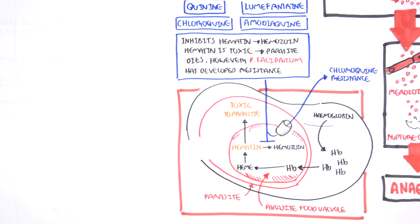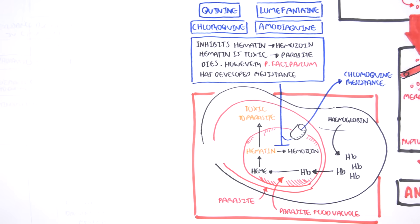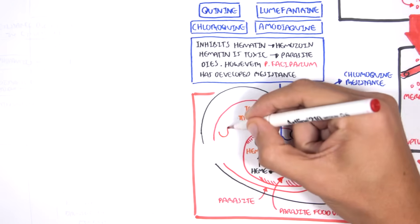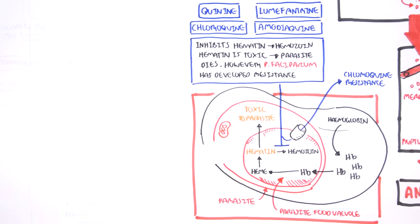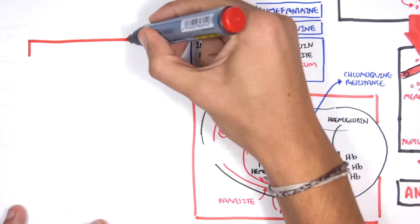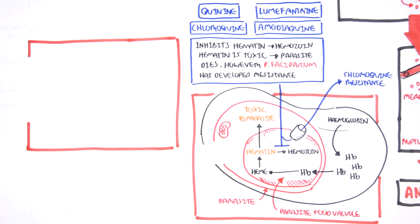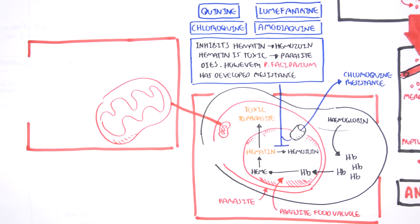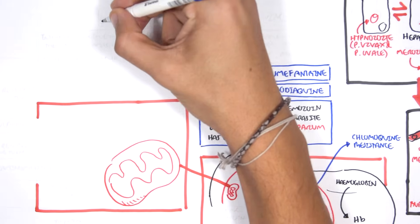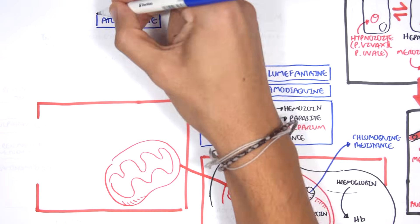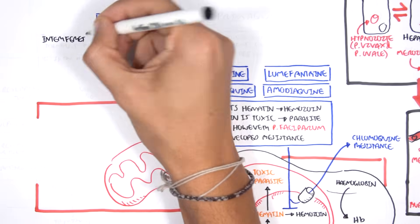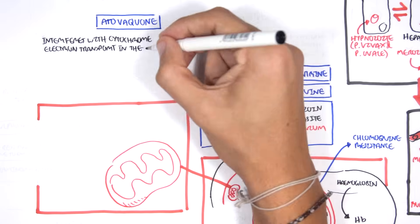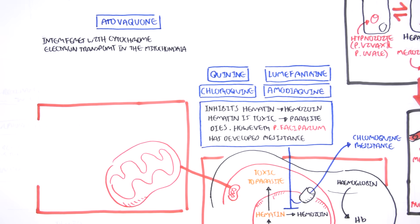Those are the quinolones. All these drugs are related in structure. The next anti-malarial drug targets the mitochondria of the parasite. This drug is known as atovaquone, and it targets the cytochrome electron transport chain in the mitochondria. Thus, we can say that atovaquone inhibits the parasite from making energy.